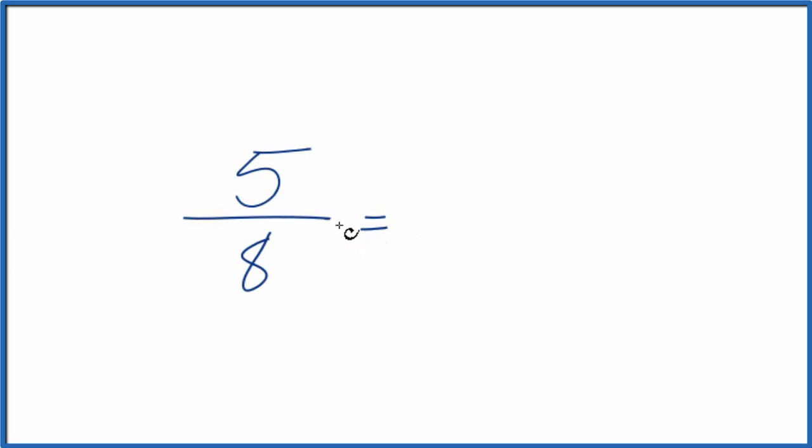If you're asked to find equivalent fractions for 5 eighths, here's how you do it. First off, what we're trying to do is find another fraction that's equal to 5 eighths, but has a different numerator and different denominator.